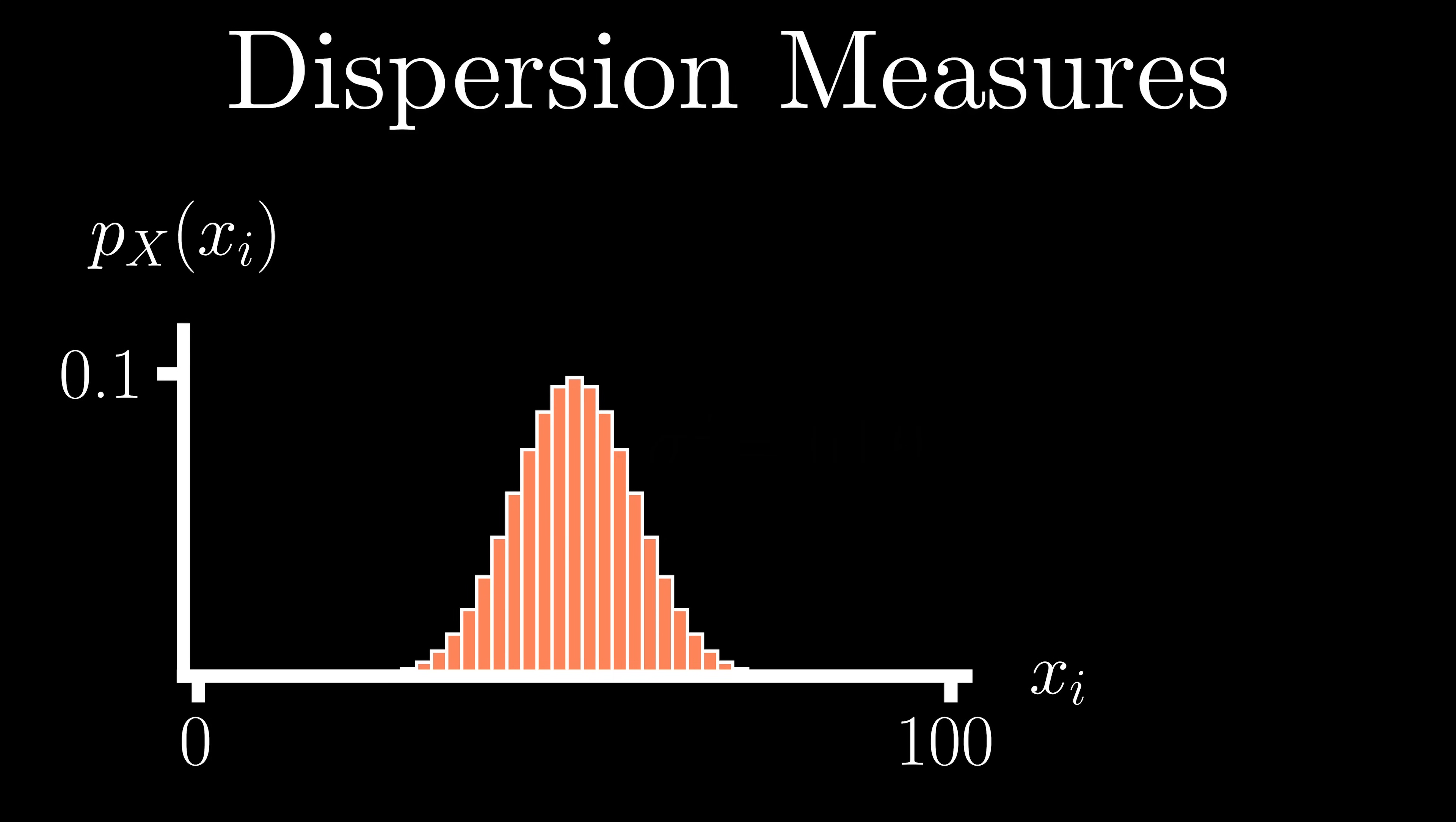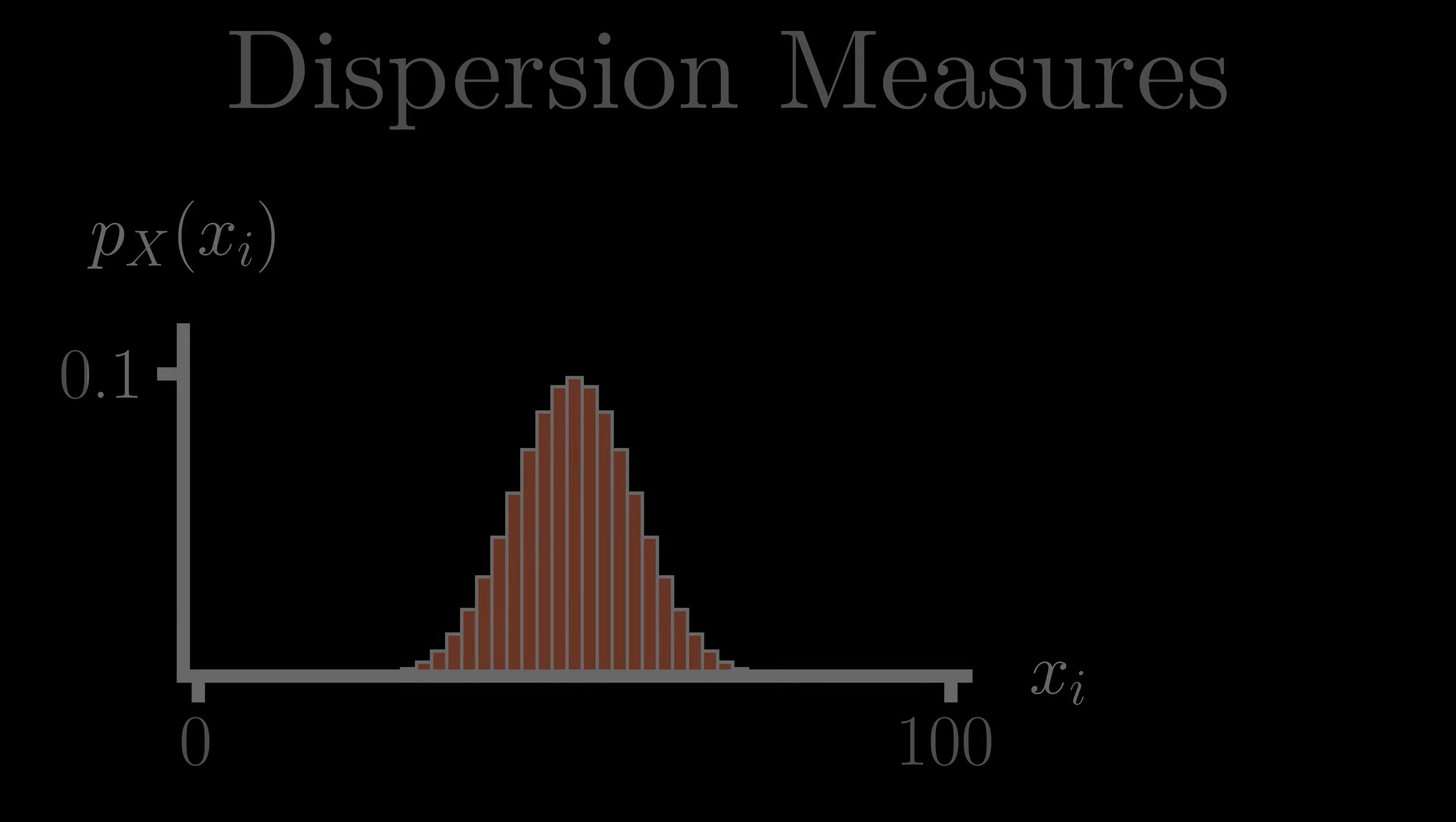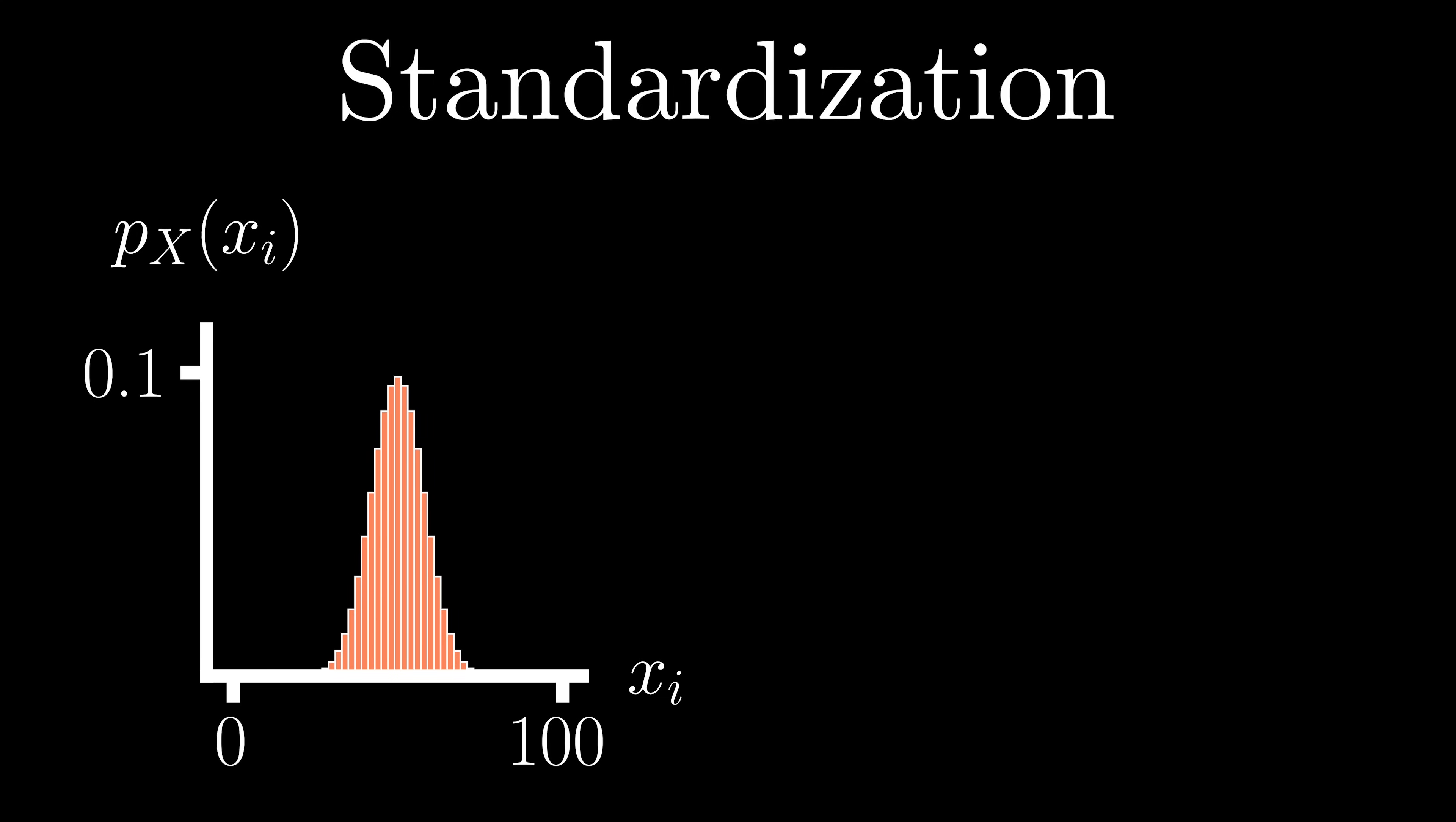Now to further describe our random variables, and in particular the tails of our distribution, we typically rely on a third type of moment, standardized moments. Before delving into standardized moments, we should probably first know what standardization means in the world of probability.